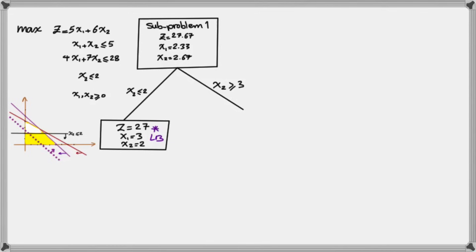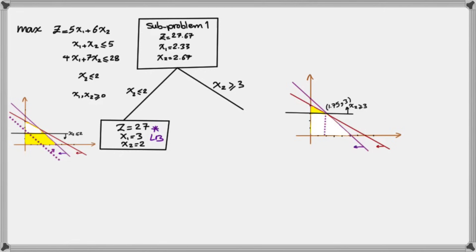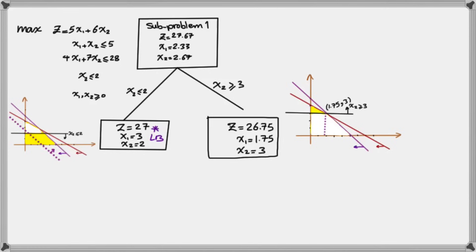From the other branch, we add x2 ≥ 3 to the original problem. This shrinks the feasible region to a small yellow triangle at the top. The best solution in that region gives x1 = 1.75 and x2 = 3, with an objective function value of 26.75. This is not yet a valid integer solution because x1 = 1.75 is not an integer. In all these sub-problems we have relaxed the integer condition, so we must continue branching until both x1 and x2 are integer. We now branch on x1: since x1 cannot be 1.75, it must be either less than or equal to 1 or greater than or equal to 2.